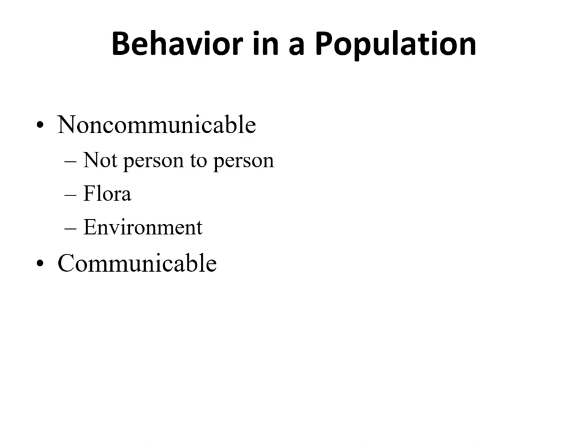A communicable disease is transmitted from person to person. If you are treating a person with a communicable infectious disease, there is a possibility you could acquire it from them. A lot of diseases are communicable — probably most of the diseases on the microbes-to-memorize list. A contagious disease is really a type of communicable disease — it is transmitted from person to person, but very, very easily, and you are very likely to acquire it from another person.